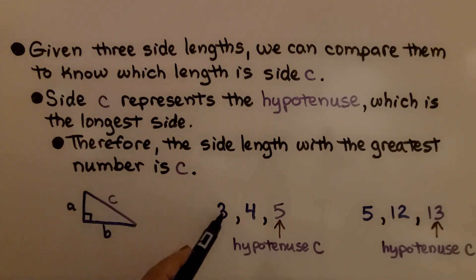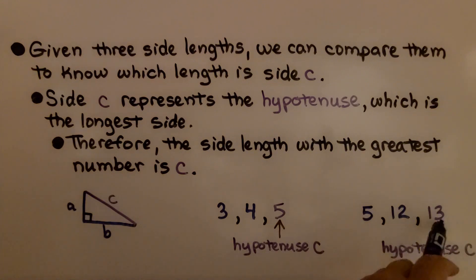If we see the side lengths of 3, 4, 5, we know the 5 is the greatest number. That's the hypotenuse c. If we see 5, 12, 13, we know 13 is the hypotenuse c.